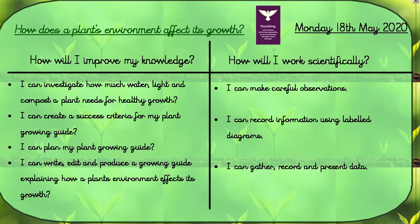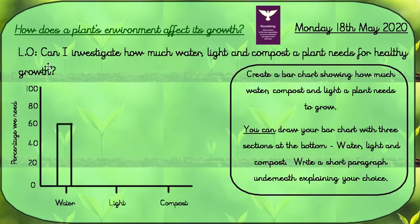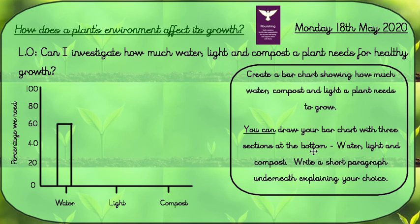Your learning objective today is: can I investigate how much water, light, and compost a plant needs for healthy growth? You're going to need to create a bar chart showing how much water, compost, and light a plant needs to grow. You can draw your bar chart with three sections at the bottom: water, light, and compost.